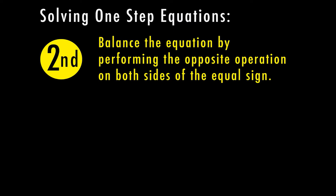Once we've identified what's going on on the same side of that equal sign with our variable, next we want to balance the equation by performing the opposite operation on both sides of the equal sign. Back to our first example, we identified that we have x plus 4 on the same side. That means we're going to perform the opposite operation, and the opposite of plus 4 is minus 4. Whatever I do on one side of that equal sign, I have to also do on the other side — this is how I keep it balanced.